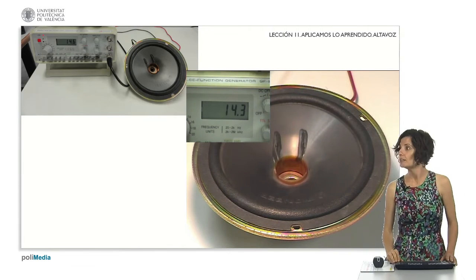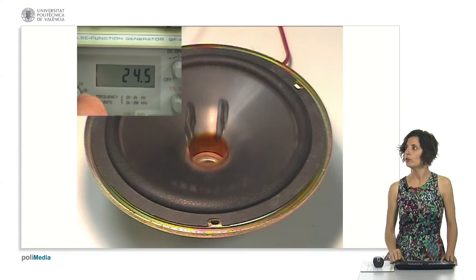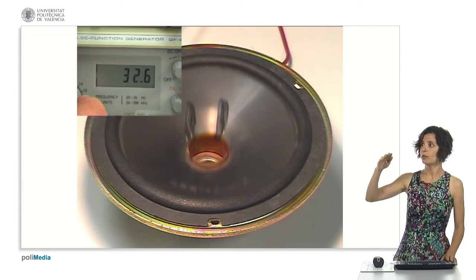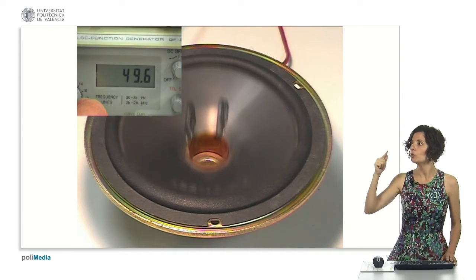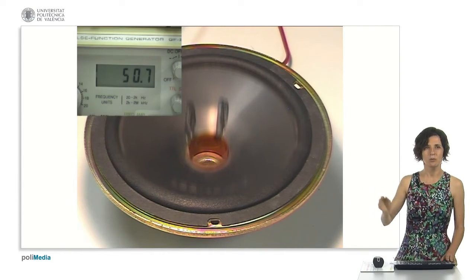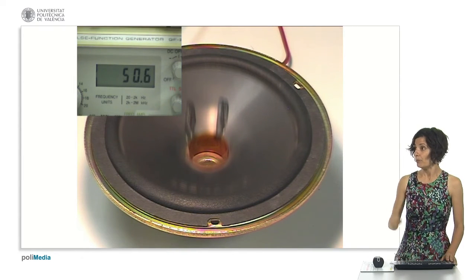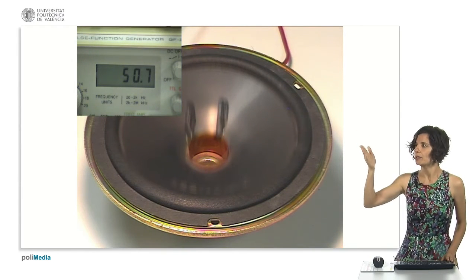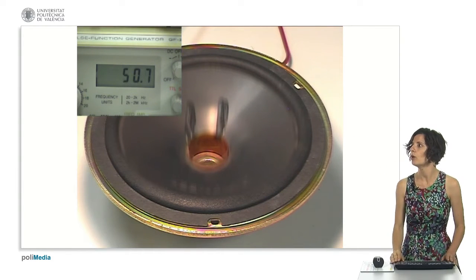If we raise the frequency, for example, up to 50 Hz, then each time we raise the frequency, the membrane moves faster and faster. What happens? The eye is not able to follow such a fast movement, and we see a somewhat blurred image. To show you that at 50 Hz, the membrane moves up and down 50 times in 1 second, I have prepared this other video.